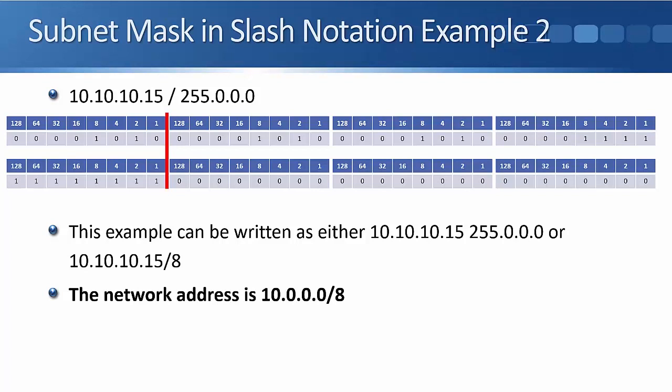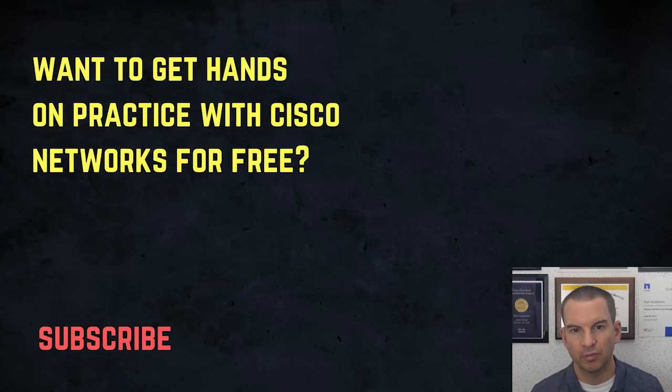The network address is 10.0.0.0/8 — not 10.10.10.0/8. When we write this out, we specify only the network portion of the address. It's a slash 8, so only the first octet is the network portion, which is 10. The last three octets are the host portion. The available addresses would be 10.0.0.1 for the first host and 10.255.255.254 for the last host. We can't use 10.255.255.255 because that's the broadcast address, and 10.0.0.0 is the network address.